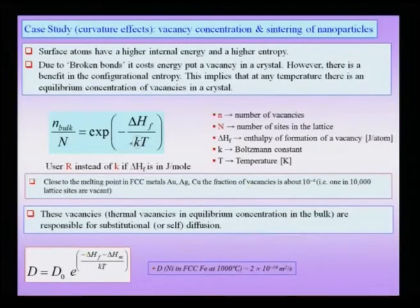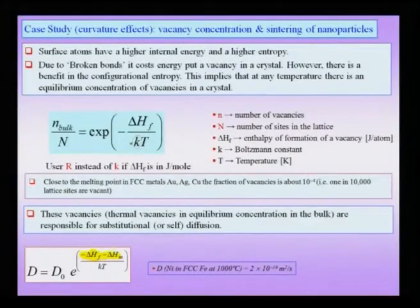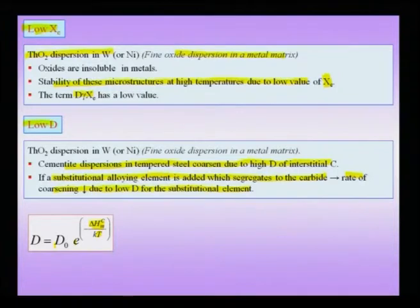When the carbide contains an additional substitutional alloying element, its growth requires diffusion of that element. Since substitutional elements diffuse by a vacancy mechanism, the diffusivity expression has two terms: the enthalpy of vacancy formation ΔHf and the migration enthalpy. This makes substitutional diffusivity much smaller than that of interstitial carbon, so the overall coarsening rate decreases when alloying elements are added to stabilize the carbide.